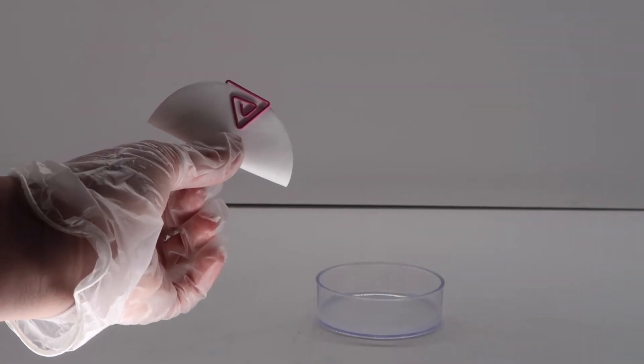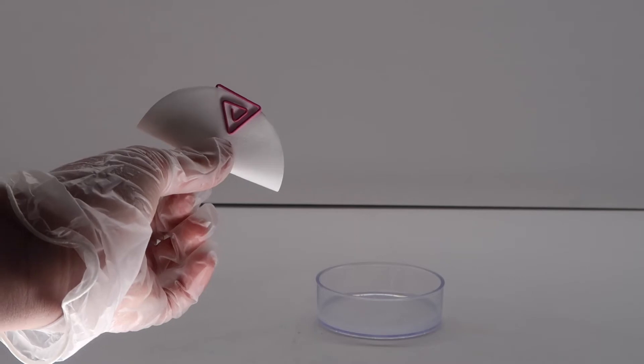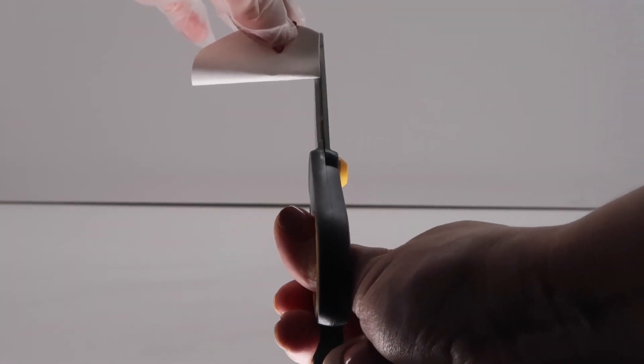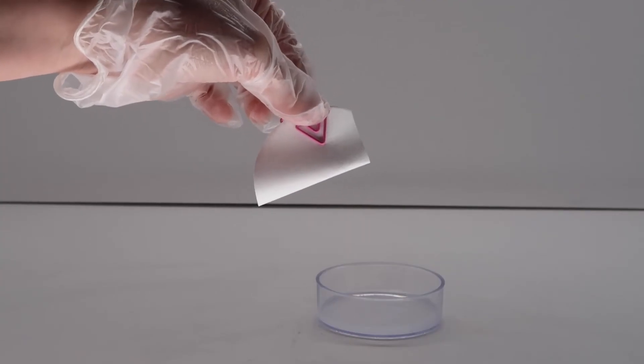Step 6: Cut straight across the bottom to make sure the filter stands up straight. Place the filter paper in the dish.